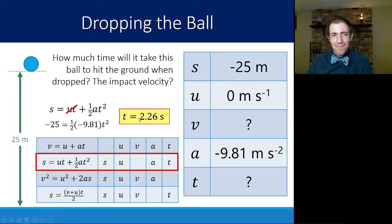Go ahead and solve for T. In this case, if you multiply both sides by two, divide both sides by negative 9.81, and then take the square root, you should get a time value of about 2.26. So then we have time. We have S, U and A. We can use any other equation to find V.